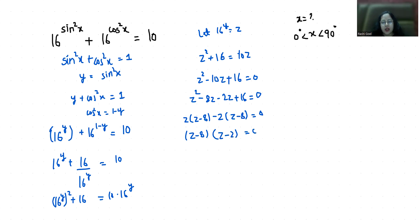Taking (z minus 8) as common factor gives (z minus 8)(z minus 2) equals 0. So the first case is z minus 8 equals 0, giving z equals 8, and the second case is z minus 2 equals 0, giving z equals 2.